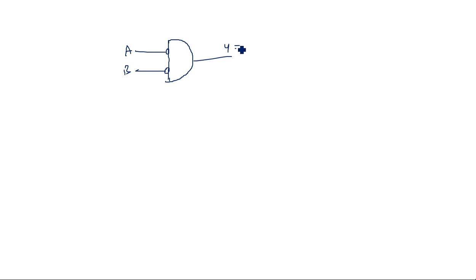The bubbled AND gate can be drawn with a bubble at each input. How many inputs are there, that many inputs will be here. A, B, output Y is equal to A bar dot B bar, which is nothing but A plus B whole bar — the NOR gate output.